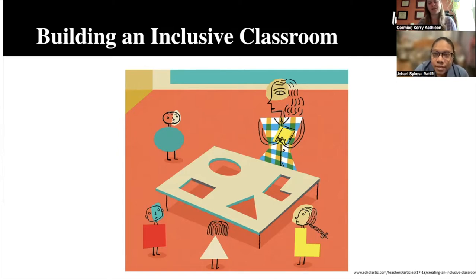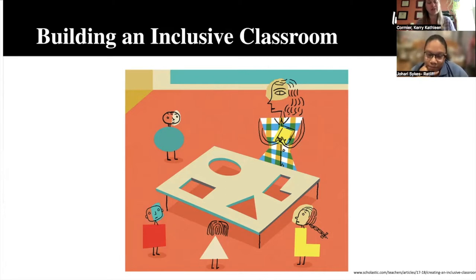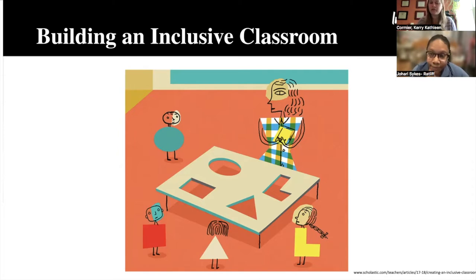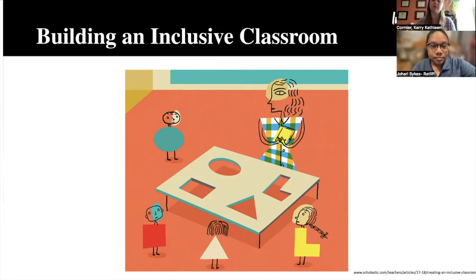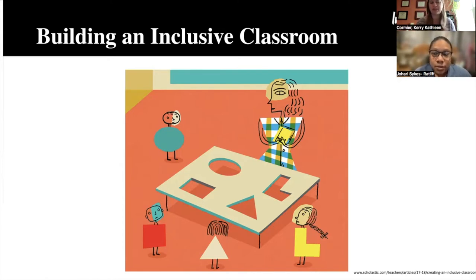One thing I love about this picture is that when we're talking about building an inclusive classroom, it's important to make sure all students feel accepted and feel like they belong. It's very clear from this visual that all students belong at this table. Acceptance and belonging are two key ideas to help you take this work forward.